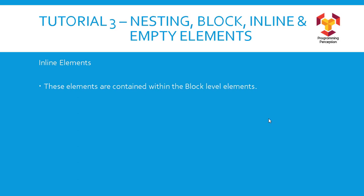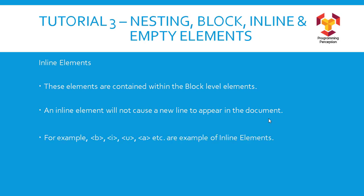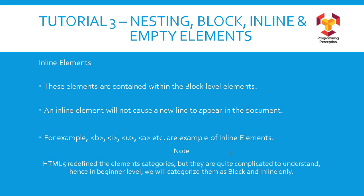Inline elements are different from block level elements. These elements are contained within block level elements. So if you have a block level element like div, ul, h1, or p, you can contain some inline elements inside them as well. In the first nesting example, p was the block level element and b was the inline element. An inline element will not cause a new line to appear in the document. b, i, u, and a are all inline elements — they will not change the line of the content. Note that HTML5 redefined element categories, but at the beginner level we will categorize them as block and inline only.